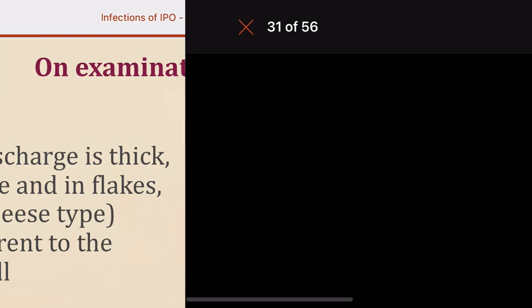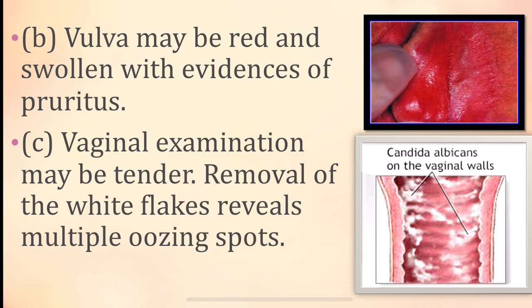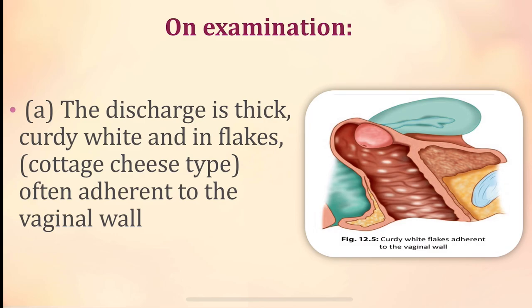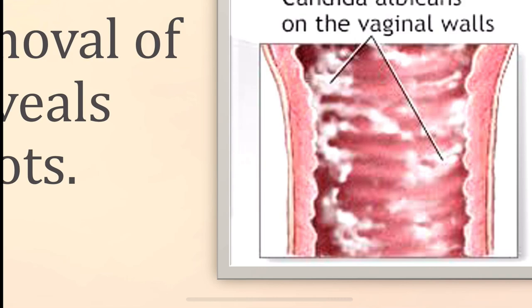The vulva will be red and swollen with evidence of pruritus. On vaginal examination, it will be very tender and painful. Removal of the white flakes, which are very adherent to the vaginal wall, will result in multiple oozing spots — that is, bleeding can occur when attempting to remove them.